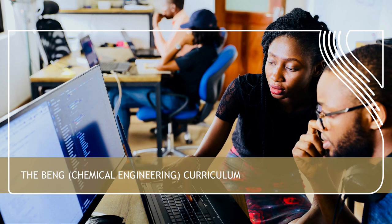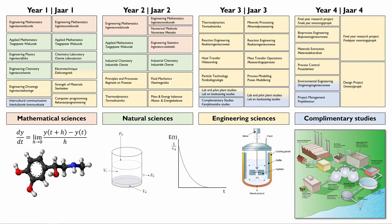In terms of the undergraduate engineering curriculum, we have a really strong program to train you to be an excellent engineer. We are ECSA accredited — the Engineering Council of South Africa accredits our four-year degree — and that allows our graduates to register as professional engineers once they graduate. The ECSA accreditation is also aligned with the Washington Accord, which means that our graduates can work overseas in any Washington Accord signatory country.